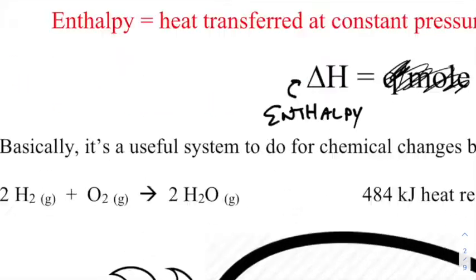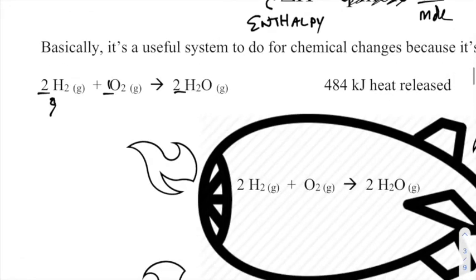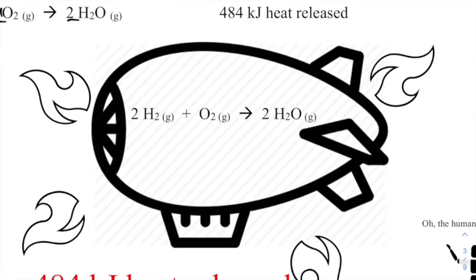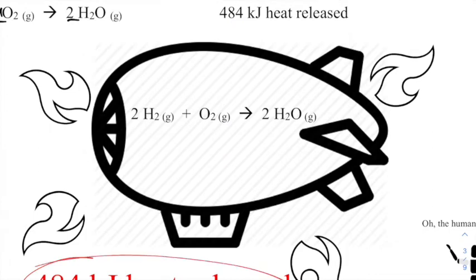Why moles? Because if I have it in moles, I can look at a balanced equation and figure out — if I have a certain number of moles and I know the heat — I can use enthalpy like one of the numbers in my balanced equation to figure out the energy occurring. It turns out that when the Hindenburg catches fire, we have 484 kilojoules of heat that is being released.